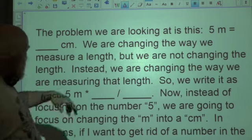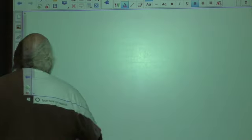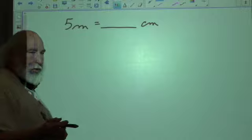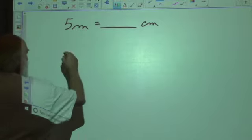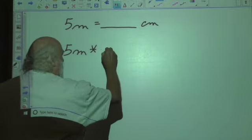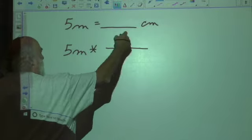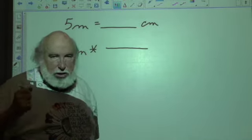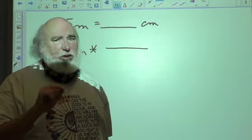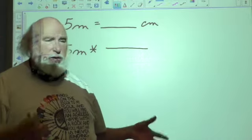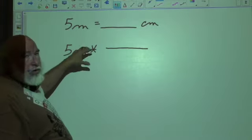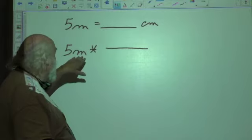So the problem is 5 meters equals how many centimeters. When we do this problem, we start with what we're given here. And instead of putting an equal sign, we put a times sign. And then we're going to convert this so that we get rid of the meters and end up with centimeters. We treat this like a multiplication of fractions problem in terms of the labels first. We don't even consider numbers until we get the labels fixed. We have meters in the numerator of a whole number, which means the denominator is 1.